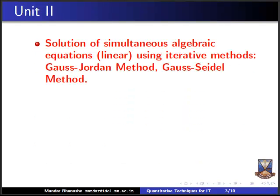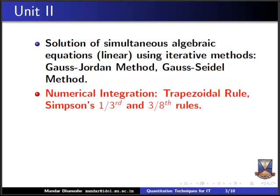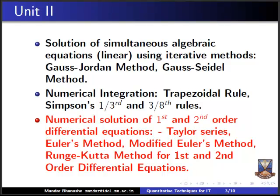In unit two, we will use two iterative methods to find the solution of simultaneous algebraic linear equations: Gauss-Jordan method and Gauss-Seidel method. Then we will do three topics from numerical integration: the trapezoidal rule, Simpson's one-third rule, and Simpson's three-eighth rule, to find the area under a given curve. Finally, we cover numerical solutions of first and second order differential equations using Taylor series, Euler's method, modified Euler's method, and Runge-Kutta method.